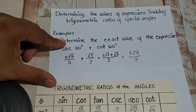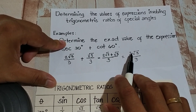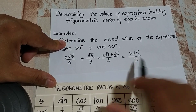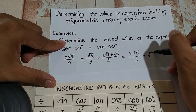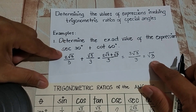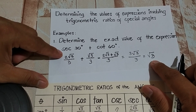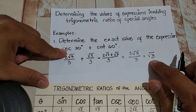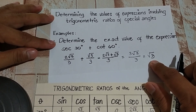Are we going to stop there? No. Since we can still simplify 3 square root of 3 over 3 — the 3 divided by 3 cancels — what is left is only square root of 3. So the exact value of secant 30 plus cotangent 60 degrees is equal to square root of 3.